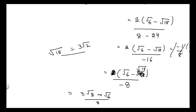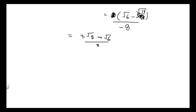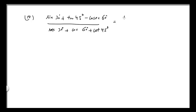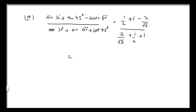Now coming to Part 4. The expression is: (sin 30° + tan 45° − cosec 60°) / (sec 30° + cos 60° + cot 45°). Substituting values: numerator = 1/2 + 1 − 2/√3, and denominator = 2/√3 + 1/2 + 1.